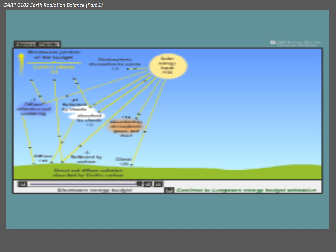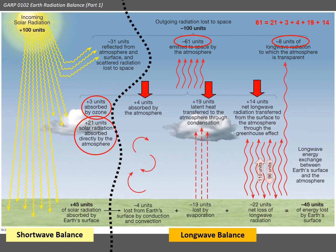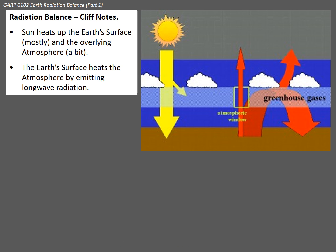Now let's move on to this side — the longwave balance — where you see a lot of lines and arrows going all over the place. Details we'll talk about, but the big picture is most important. We have 8% or 8 units of Earth's longwave electromagnetic radiation that just leaves the Earth's surface, travels straight through the atmosphere, and is lost into outer space — which is great because we need it to cool the planet.